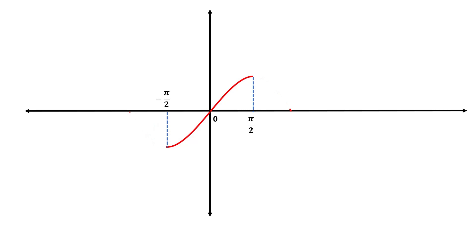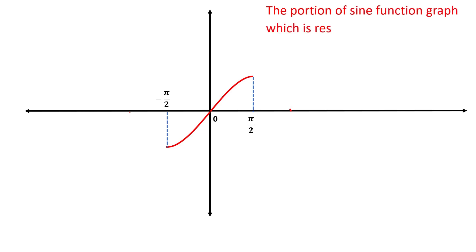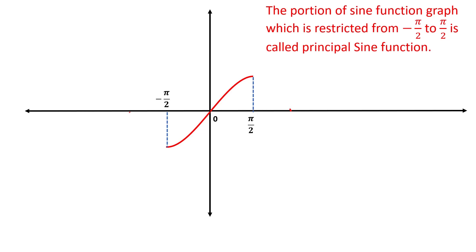Now we restrict the graph of the sine function from -π/2 to +π/2, and we truncate the graph before -π/2 and after π/2. The portion of the sine wave restricted from -π/2 to +π/2 is called the principal sine function. Now we check whether this principal sine function is bijective or not.